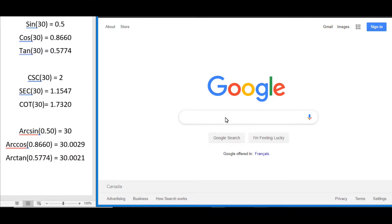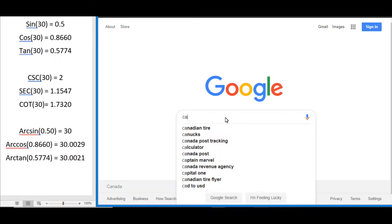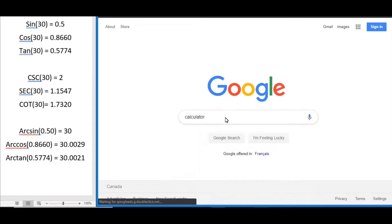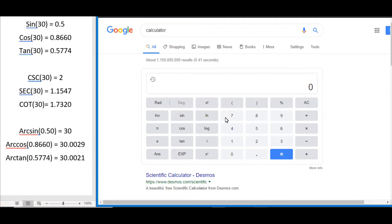To get to the Google online calculator, just type in calculator into your Google search engine. You can see there it pops up for us, so we highlight that and press enter and it takes us to this page here.